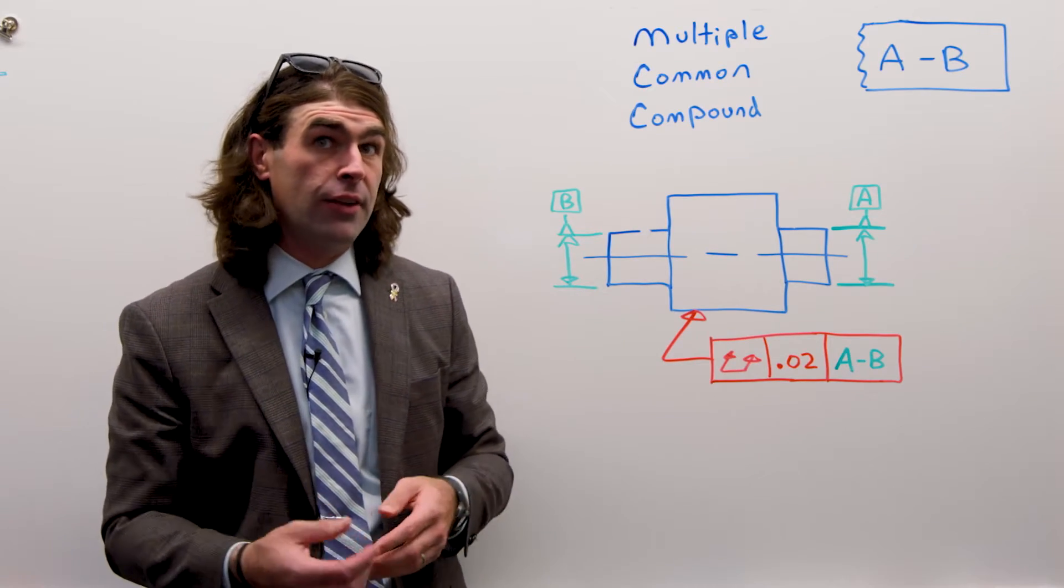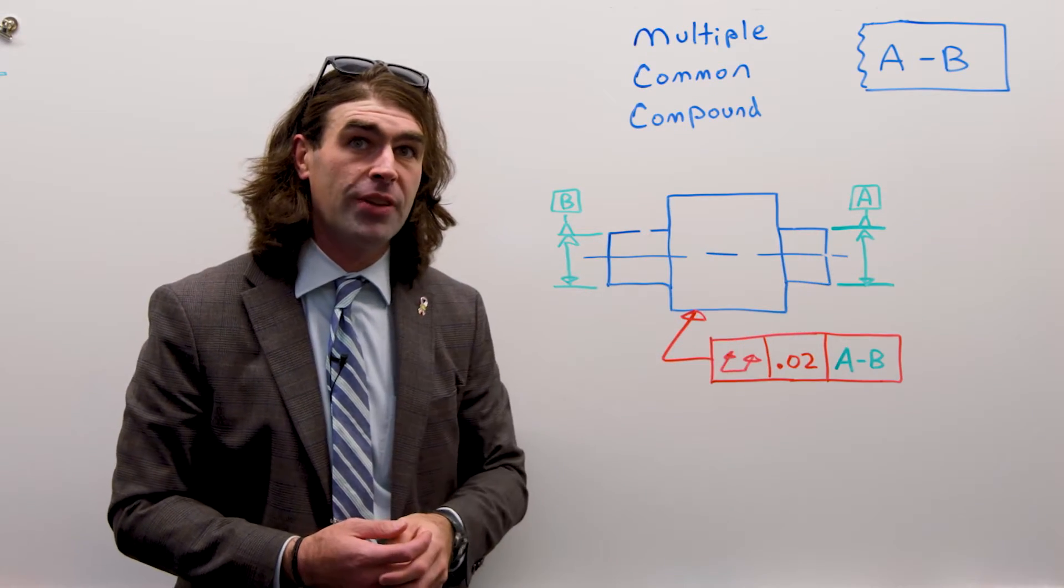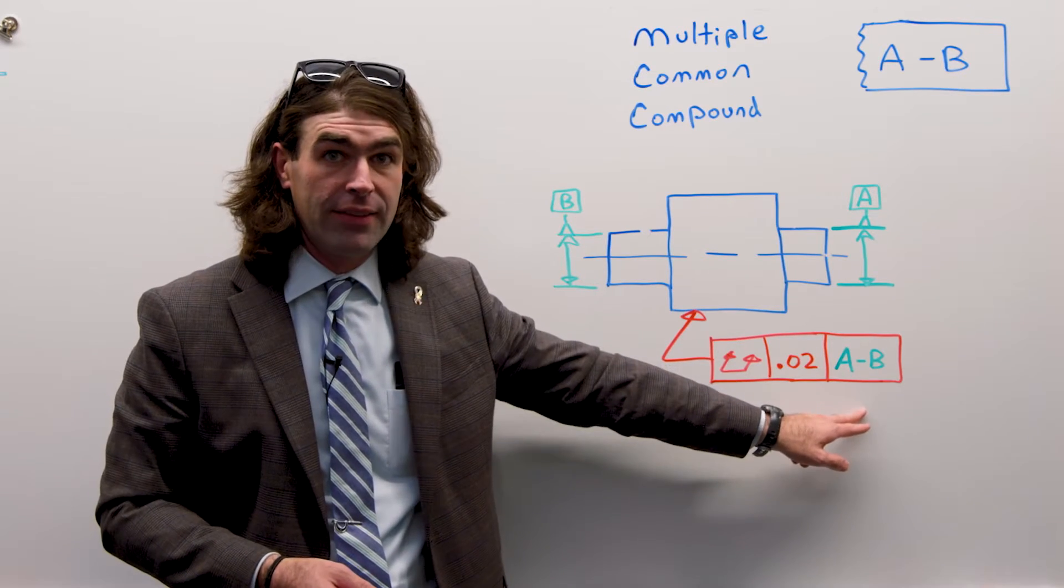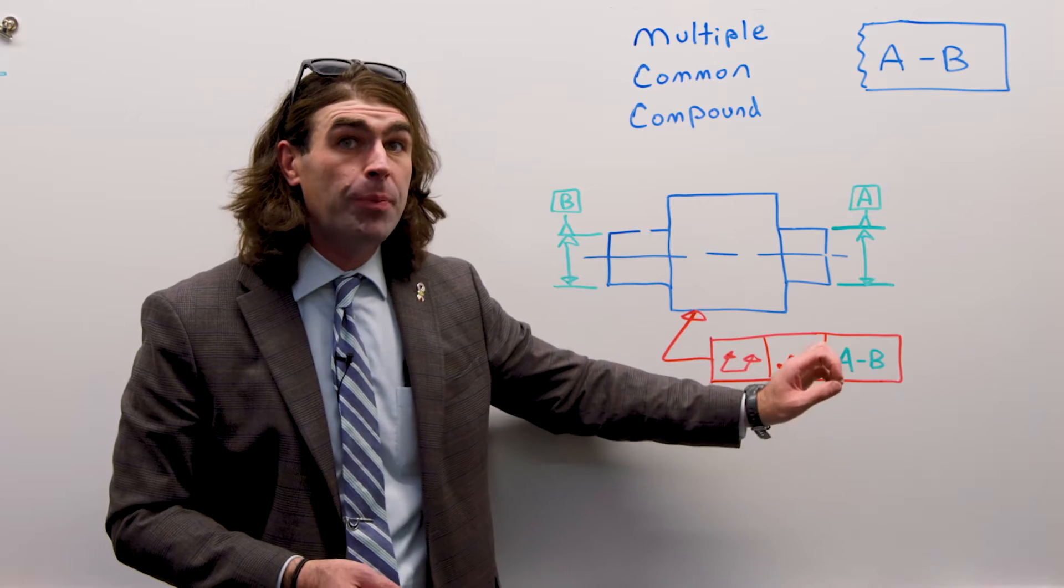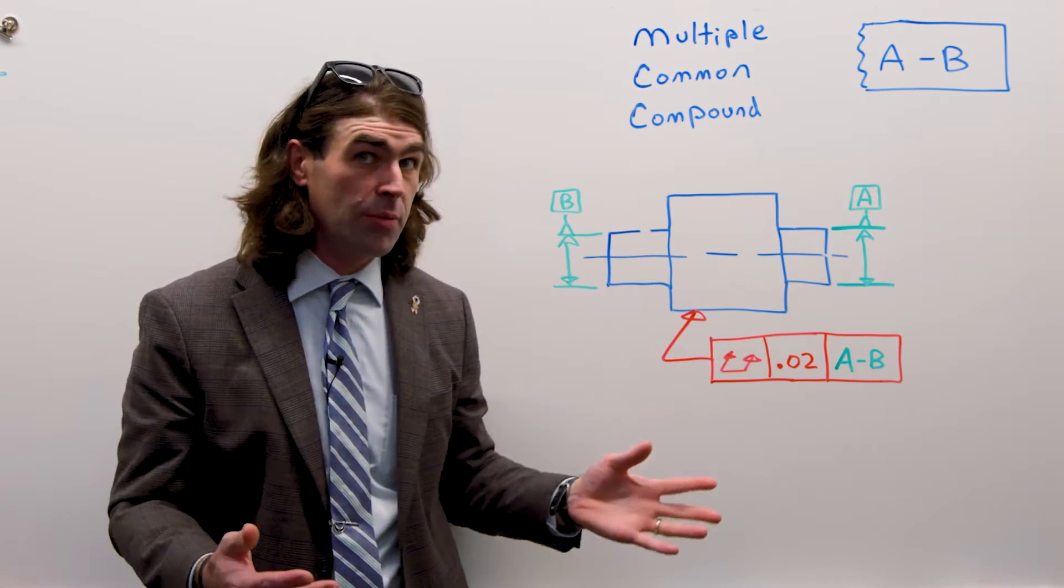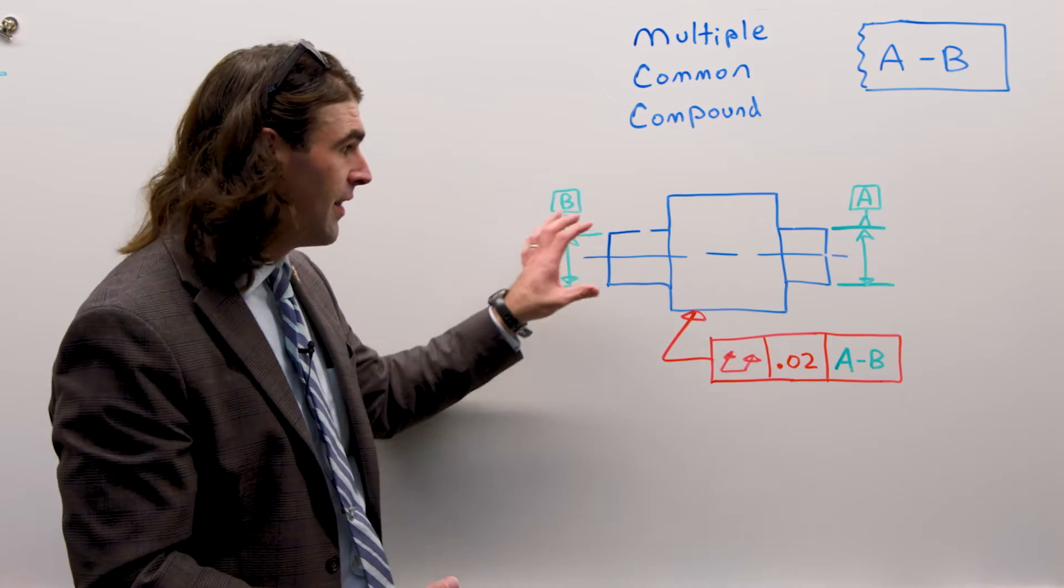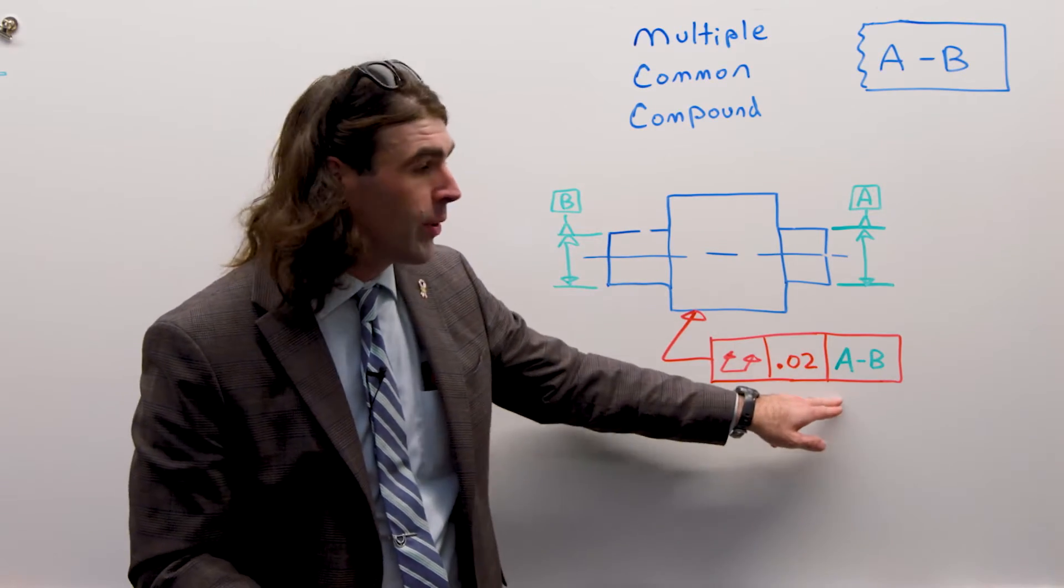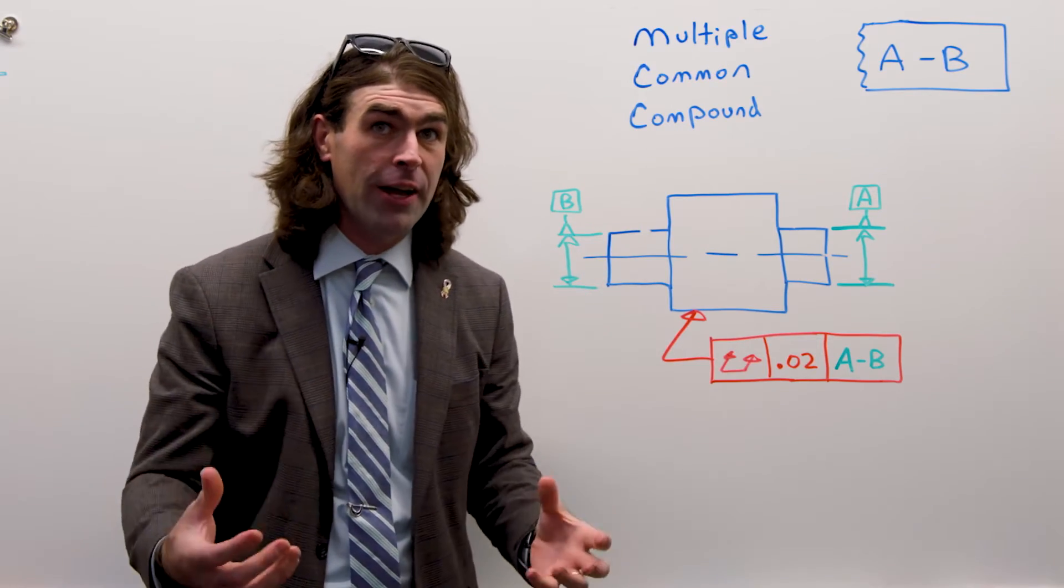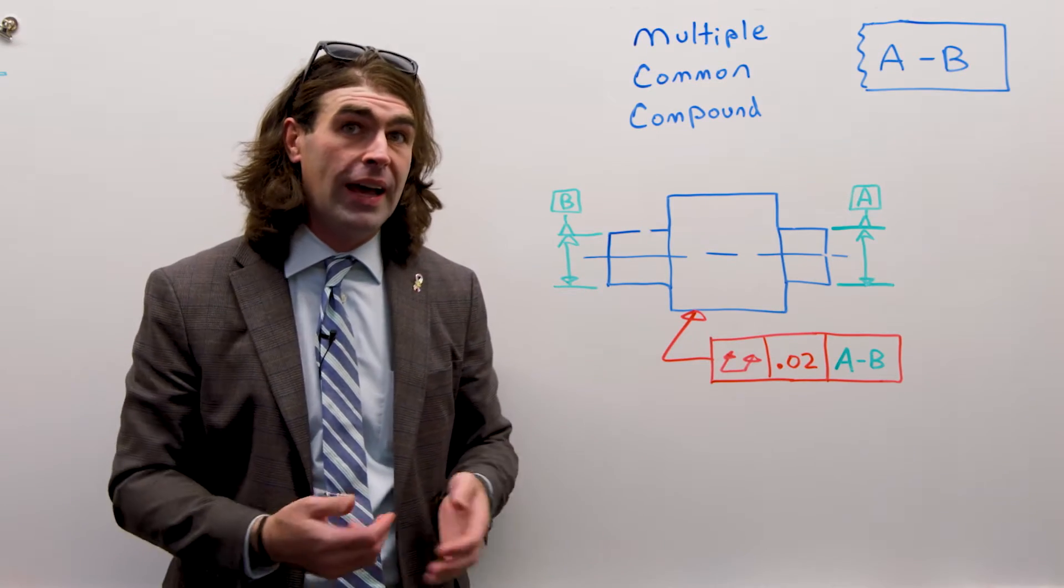Now, one important thing to recognize here is that this datum feature develops an axis and this datum feature develops an axis. But together, it's a single datum axis, datum axis A-B. It's a different entity than datum axis A. There could conceivably, if there's a more complicated part, be some other call out to just datum axis A, and that would be just here. When we call them out with this hyphen, it means they both develop one axis. And if you think about it, if you put this part in V-blocks and spin it, it's spinning about one axis, not two axes.